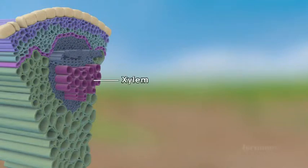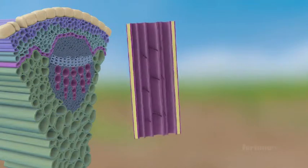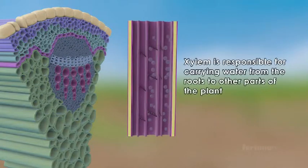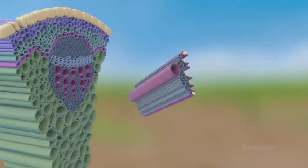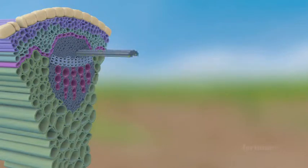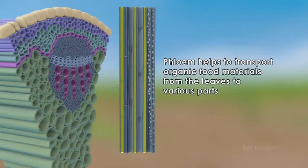Xylem and phloem are both complex permanent tissues. While xylem is responsible for carrying water from the roots to other parts of the plant, phloem helps to transport organic food materials from the leaves to various parts.